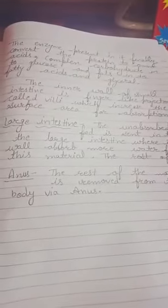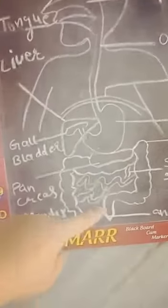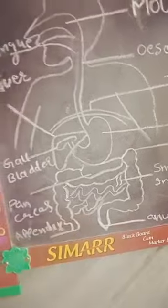The enzymes present finally convert proteins to amino acids, complex carbohydrates to glucose, and fats into fatty acids. The inner wall of the small intestine has finger-like projections — you can see this — called villi, which help in the absorption of digested nutrients.